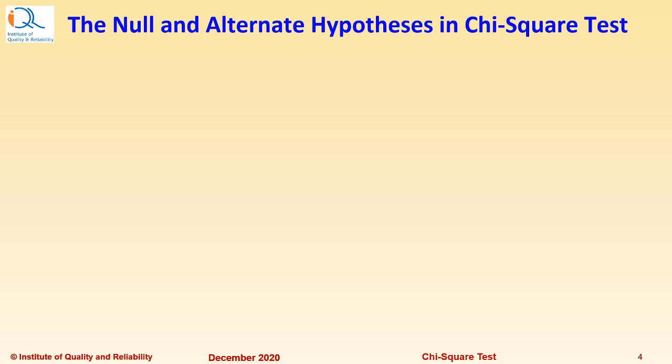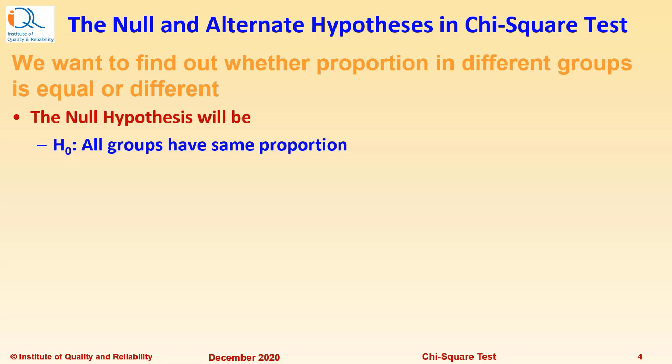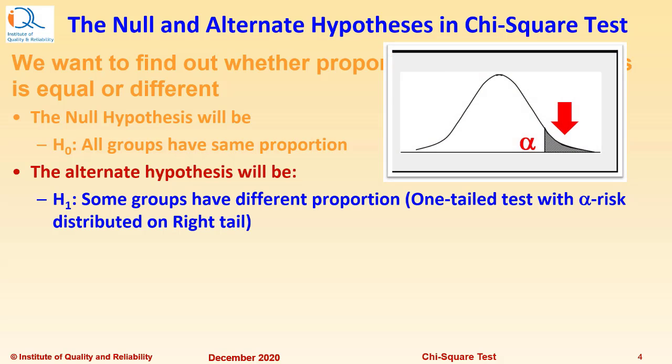So, let us see the null and alternate hypothesis in Chi-square Test. We want to find out whether proportion in different groups is equal or significantly different. The null hypothesis will be H0: All groups have the same proportion. The alternate hypothesis will be H1: Some groups have different proportion.